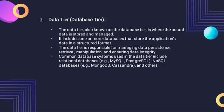The third layer is the data layer, also known as the database layer, internal layer, or physical layer. This level describes how the data is actually stored in storage devices. This level is also responsible for allocating space to the data. This is the lowest level of the architecture. The common database systems used in the data tier include relational databases, NoSQL databases, and others.